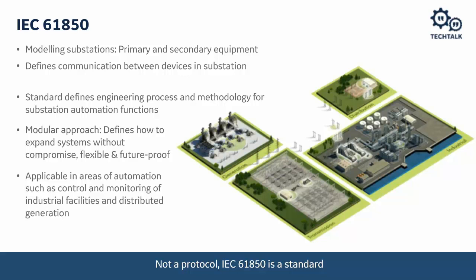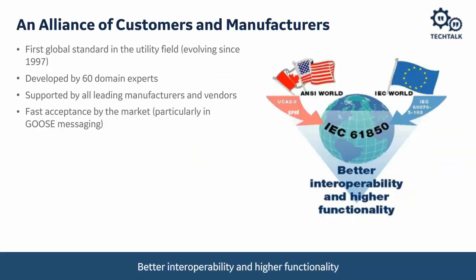On top of that, the standard defines some of the engineering processes and methodologies we will use for substation automation functions. The standard uses a modular approach to determine how we expand and grow the system, and it's applicable to most substation control and monitoring functions. IEC 61850 has been evolving since 1997. The GOOSE messaging I sent in the fall of 2000 was actually UCA GOOSE — the forerunner of IEC 61850. IEC 61850 has had much more acceptance than UCA ever did and has become the standard; UCA doesn't really exist as we knew it back in those days.